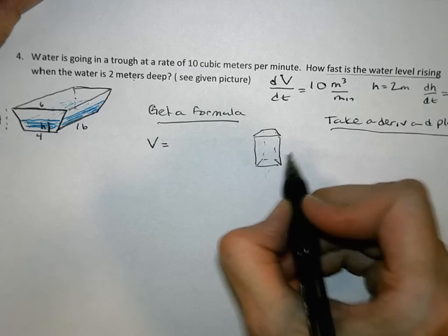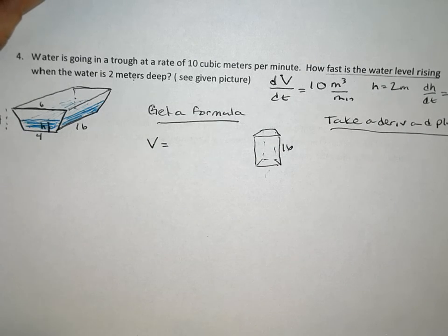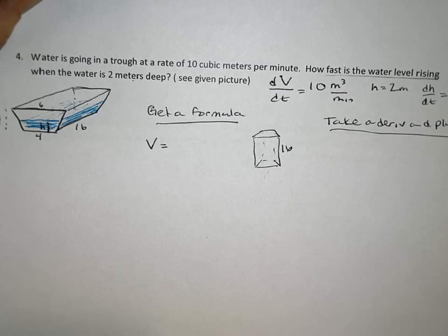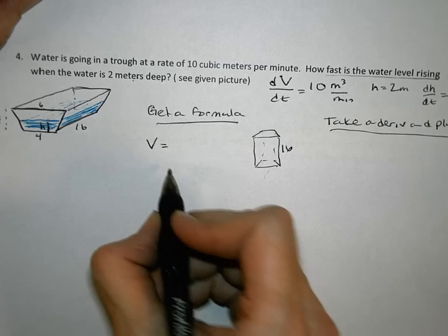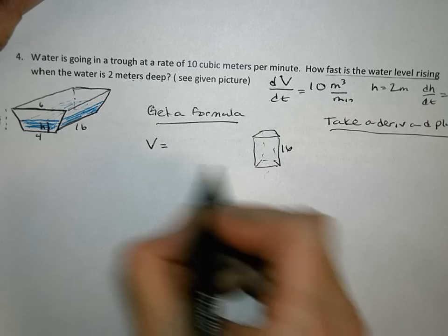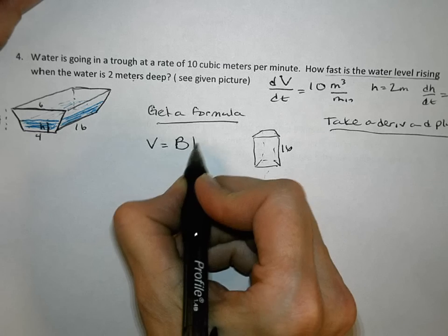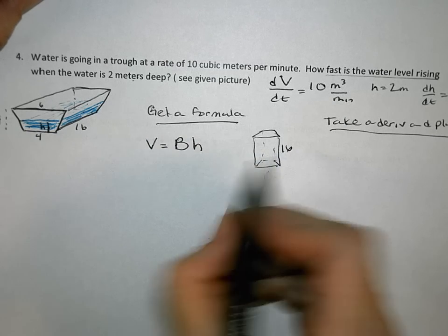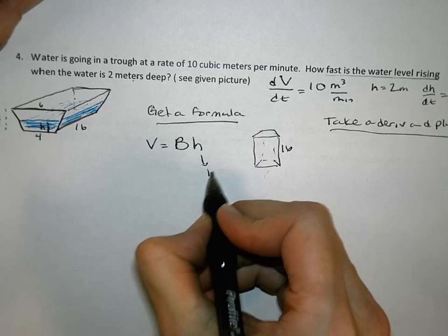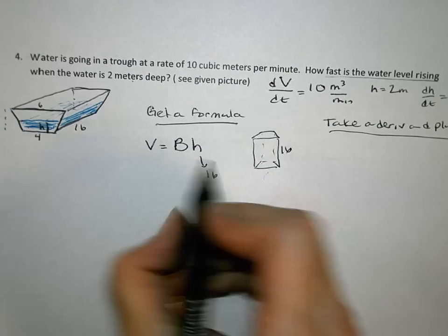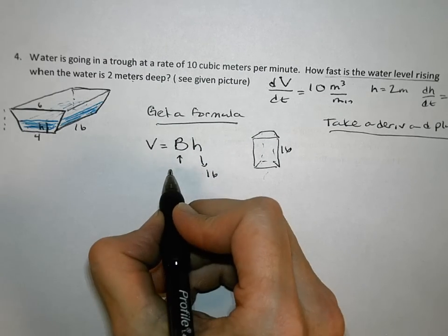And notice that it has two bases that are the same, and then it has this height. According to this picture, the height would be 16 if we stood it up on end. No horse is going to drink out of it like this, though. But the height is going to be 16. And the volume formula for any prism is the area of its base times the height. We already know that the height is 16. And for the area of the base, that's what B stands for, is area of the base.